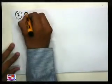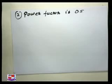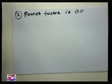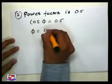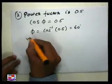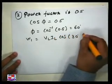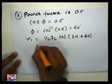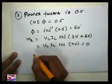Our second case: what is the power factor if power factor is 0.5? So cos φ = 0.5, therefore φ = cos⁻¹(0.5), so the angle will be 60°. We can see that W1 = VL into IL into cos(30° + 60°), which gives VL into IL into cos(90°), so W1 = 0.